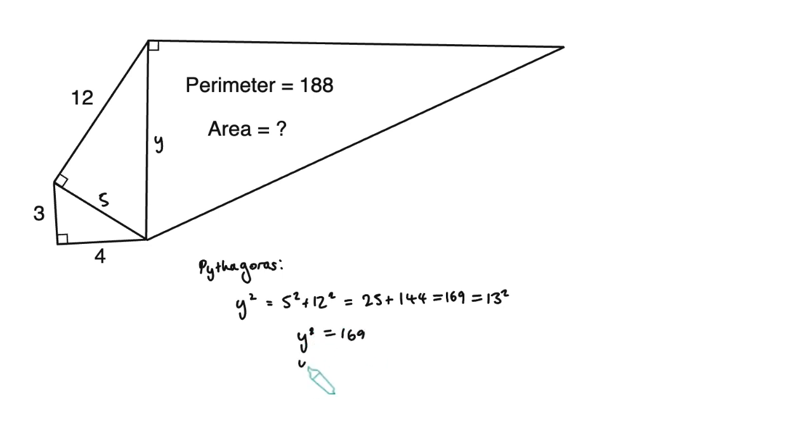which is 13 squared. And so Y is 13, another one of the famous Pythagorean triples, five, 12, 13.